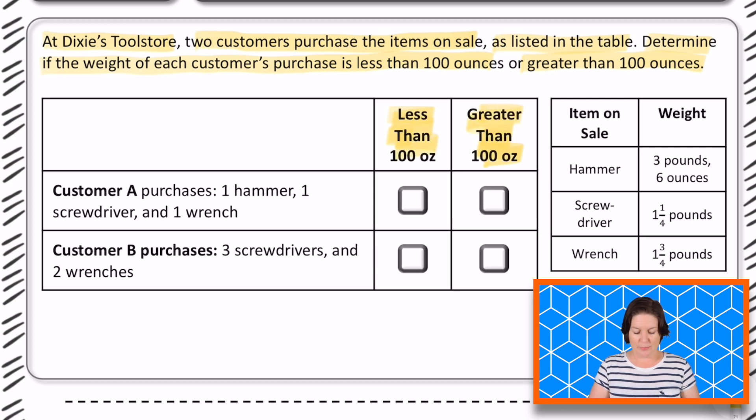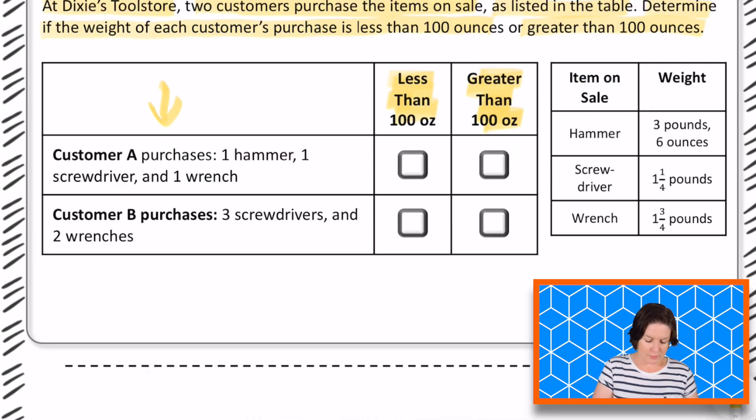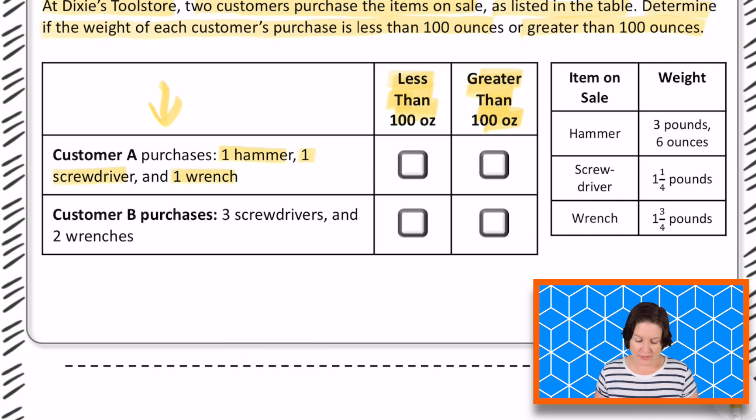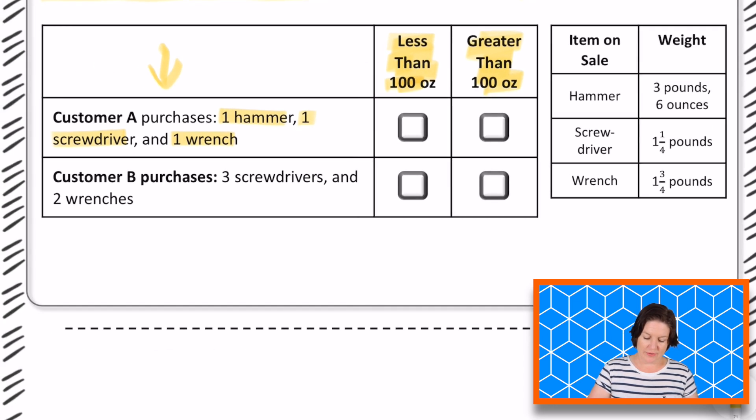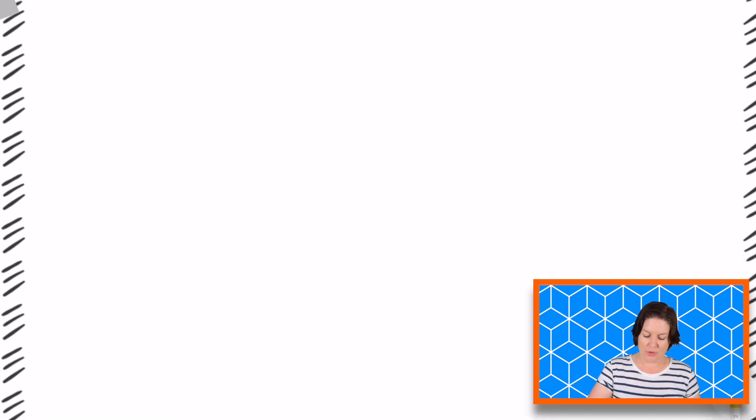So we have those two options right there. We will match the scenarios that are right here that customer A and customer B have purchased with the less than or greater than 100 ounces. Okay, so it says that customer A purchases one hammer, one screwdriver, and one wrench. So that means one of each of the items on sale. One hammer, one screwdriver, and one wrench.